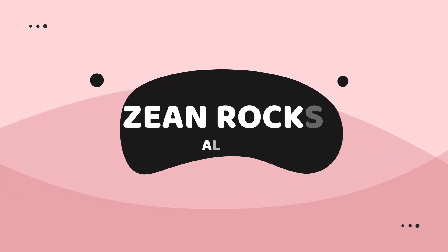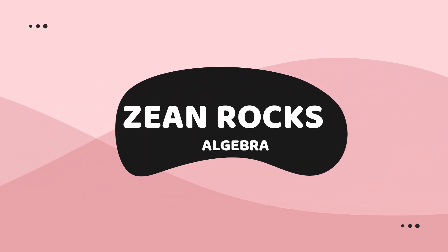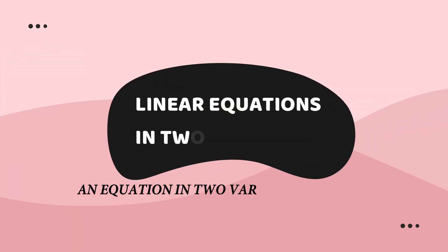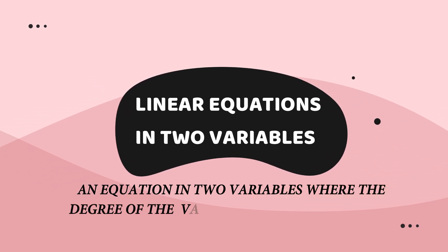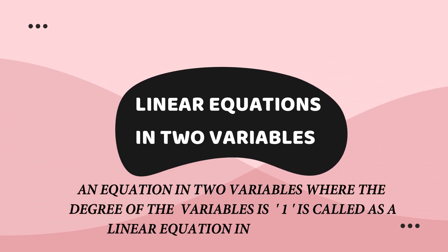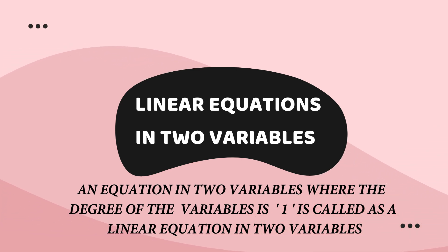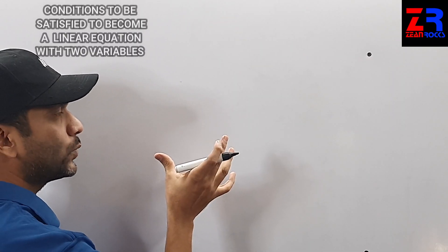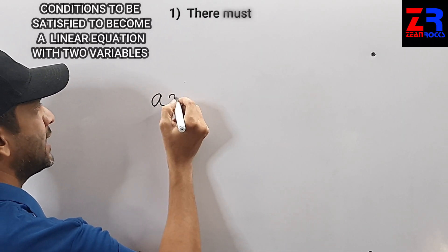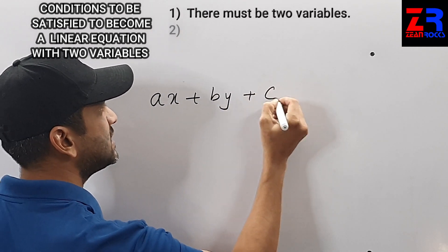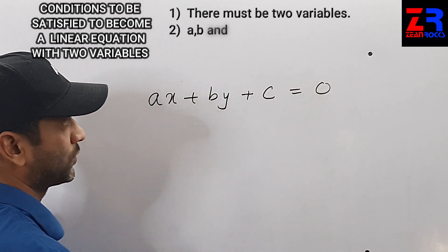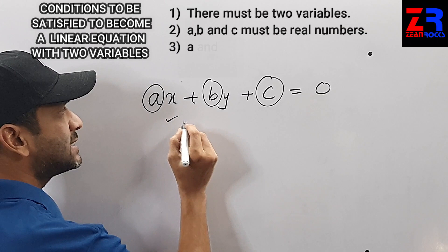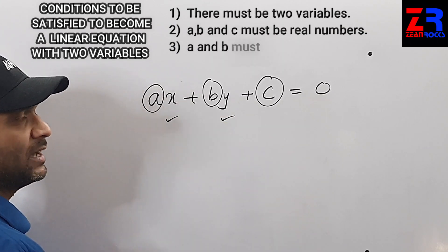Hi everyone, welcome to Zine Rocks. We are in a new topic of algebra: linear equations in two variables. An equation in two variables where the degree of the variables is one is called a linear equation in two variables. The standard form of a linear equation in two variables is ax + by + c = 0, where a, b, c are real numbers and x and y are variables.